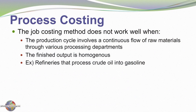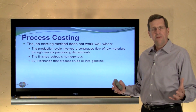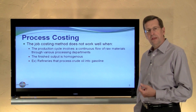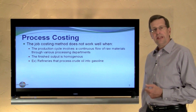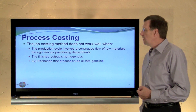Recognize that the system we looked at in the previous chapter, the job costing system, does not work well in those situations where the production cycle involves a continuous flow of raw materials through various processing departments, where the finished output is a homogeneous pool of output — such as, for example, where refineries process crude oil into gasoline. We don't really have discrete jobs or units or barrels. Instead, we just have a pool of accumulated costs or accumulated products that are processed into a pool of finished output. And so we need to revise our accounting system to accomplish the proper tracking of cost for production processes that occur in this fashion.